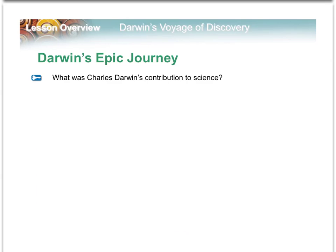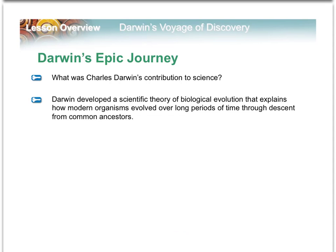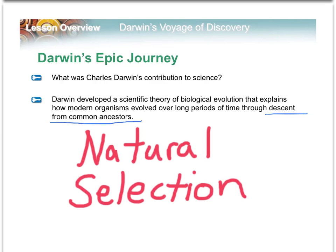What was Darwin's contribution to science? Darwin developed the scientific theory of biological evolution that explains how modern organisms evolved over long periods of time through the descent of common ancestors. You'll hear that expression a lot, because that's the terminology that Darwin used. But most people commonly refer to this as natural selection.